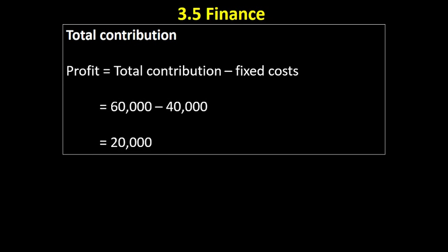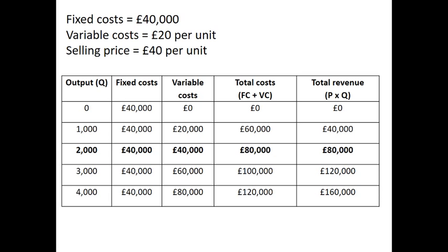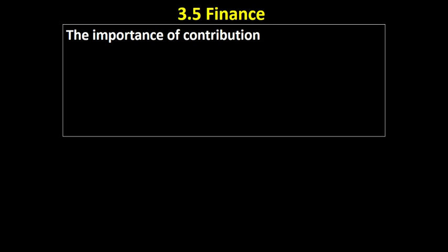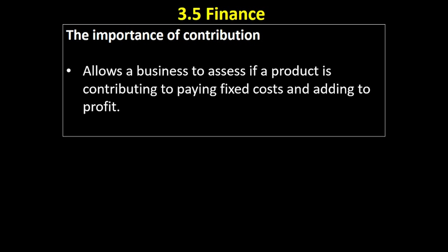So total contribution minus fixed costs is another way of working out profit. The importance of contribution is that it allows a business to assess whether each unit is contributing towards paying its fixed costs and adding to its profit.